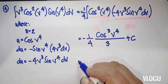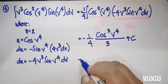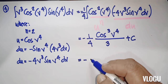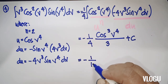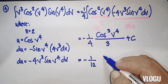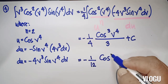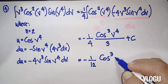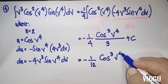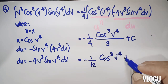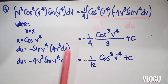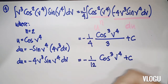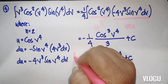Therefore the final answer is negative 1 over 12 times cosine cubed(v⁴) plus C.